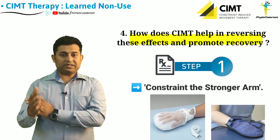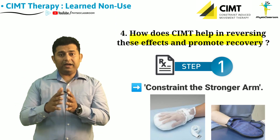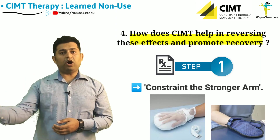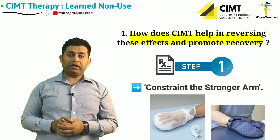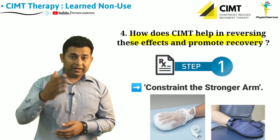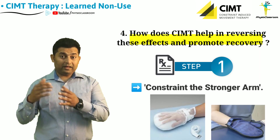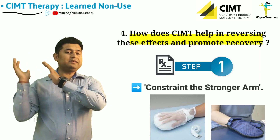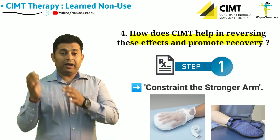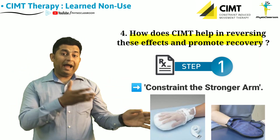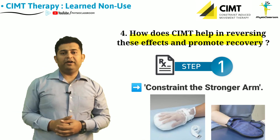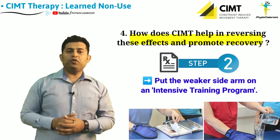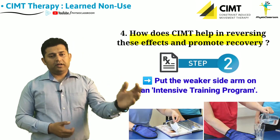Therefore, all the brain's attention is now going to get diverted and directed towards the weaker side. Step two: put the weaker arm on an intensive training program, which we call a boot camp or a crash course.